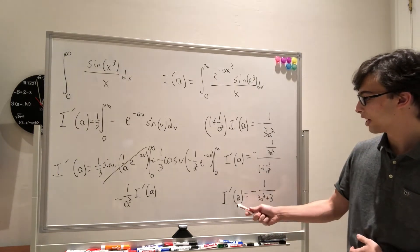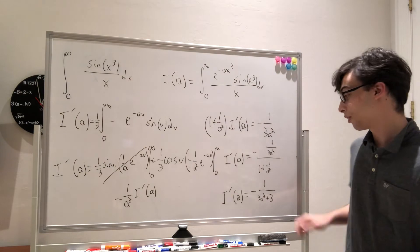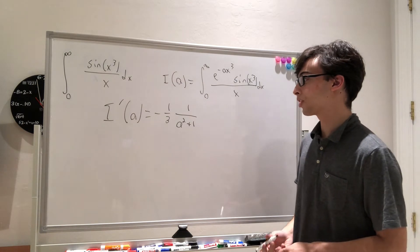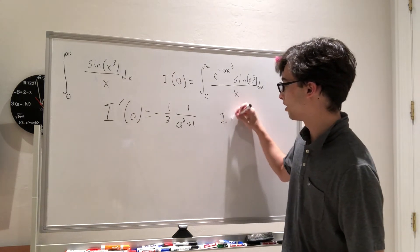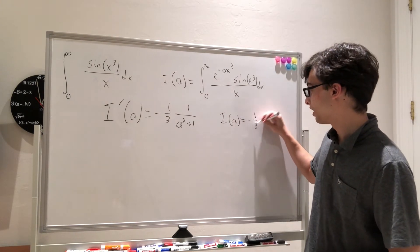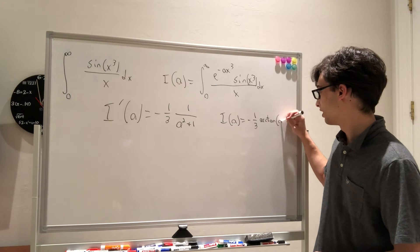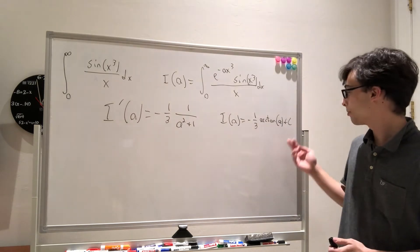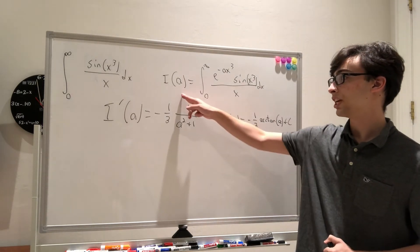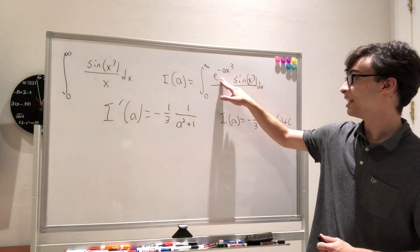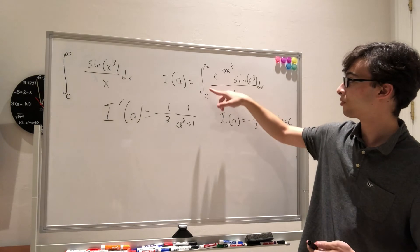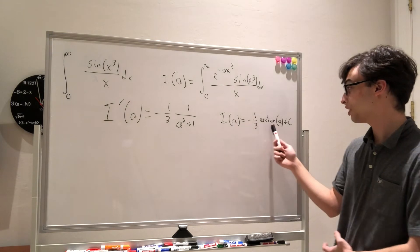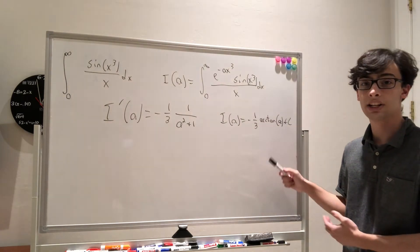Now all we need to do is integrate this to get back the formula for I of a. We have I prime of a equals negative one-third times 1 over (a squared plus 1), which means I of a equals negative one-third arctangent of a plus C. We need a plus C because there could be a constant we don't know. Our original goal is to find I of 0, because plugging in 0 gives e to the 0th power equals 1, leaving I of 0 equal to the integral from 0 to infinity of sine of x cubed over x dx — the original problem. Plugging in 0 gives arctangent of 0, but we still have the unknown constant C, so we need to solve for C.